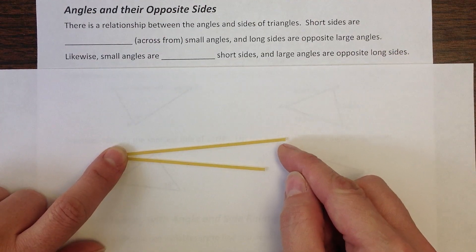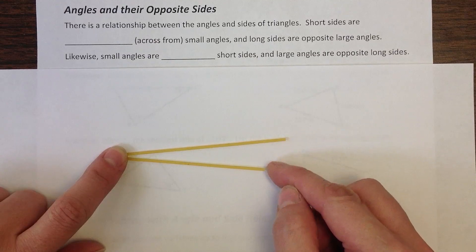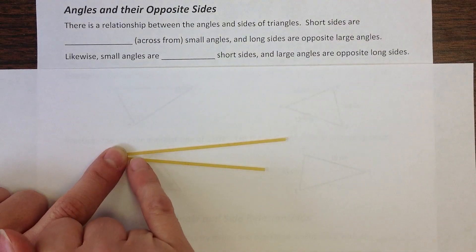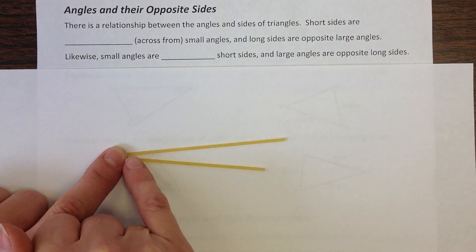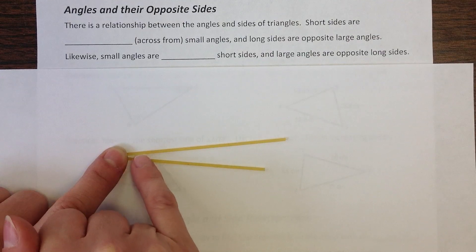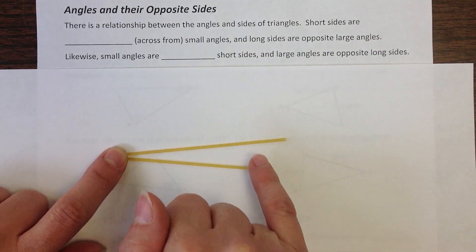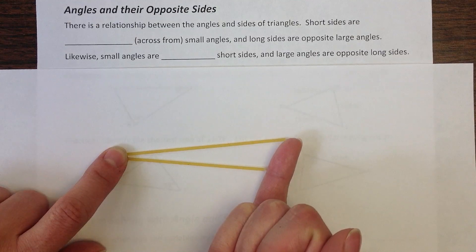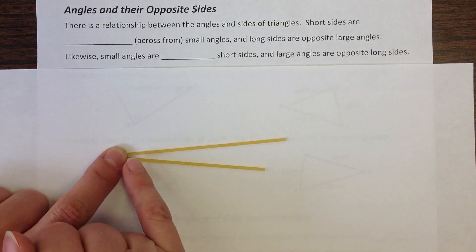So pretend there's an elastic connecting the ends of these noodles so that you have a triangle. I want you to watch what happens to the opposite side of this angle. So this angle across from it is the opposite side. See how small it is?